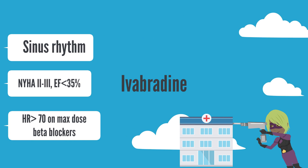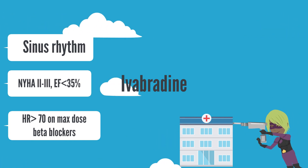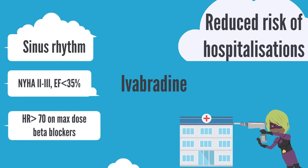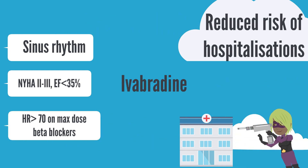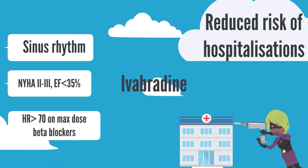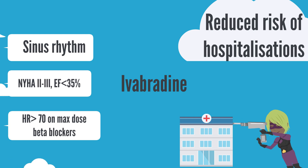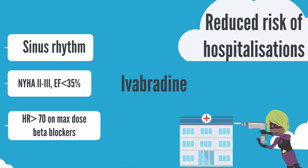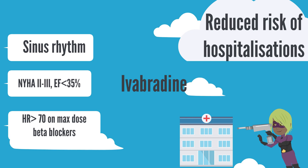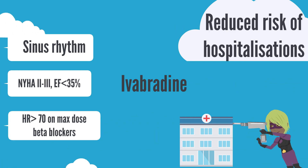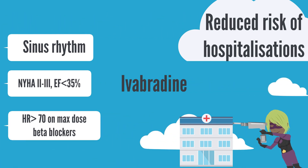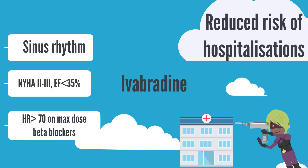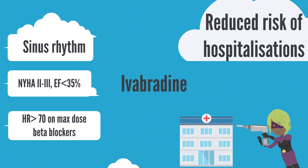In patients who do not achieve adequate heart rate control on maximal doses of beta blockers, the addition of ivabradine is an option. Ivabradine slows the heart rate by inhibiting the cardiac pacemaker current, also known as the funny current of the heart. These patients should be in sinus rhythm with an ejection fraction of less than 35%. The addition of ivabradine has been shown to reduce the risk of hospitalizations in patients with heart failure.